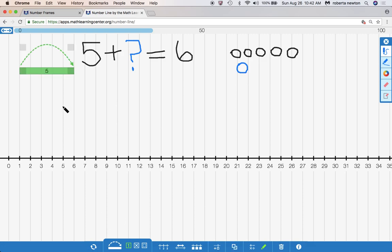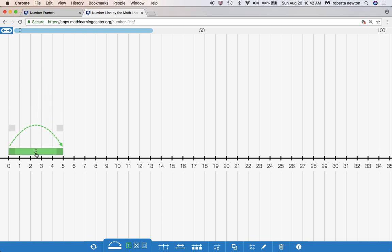Let me see if I could show that on the number line. Let's see. Take all that away. Then I'll go. There were five penguins and another one came. Another one came. Let me see. I'm trying to get to six.